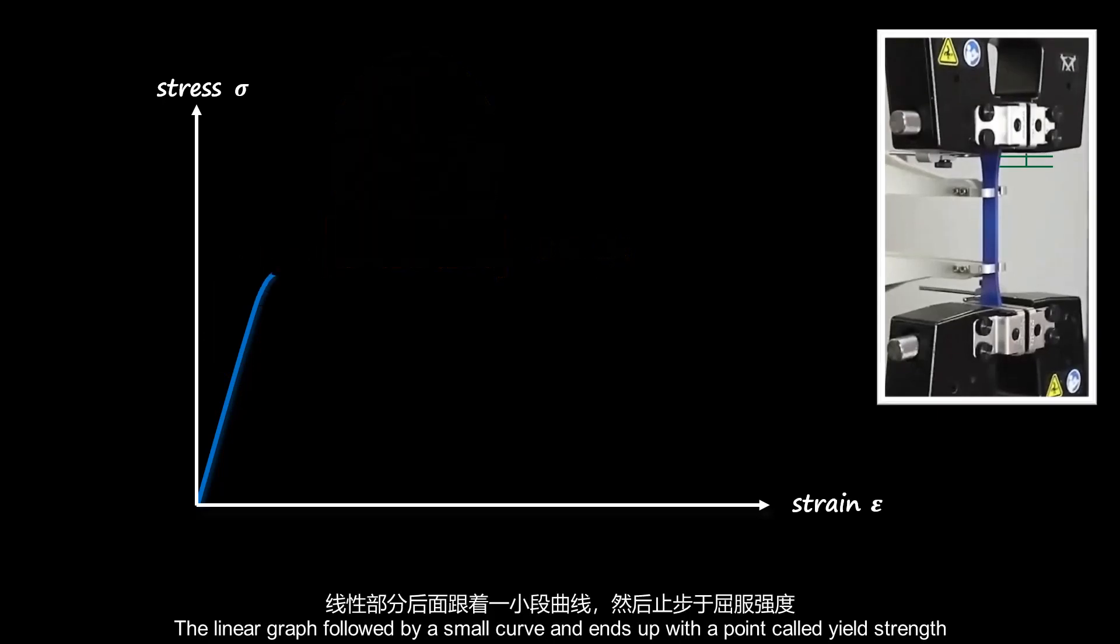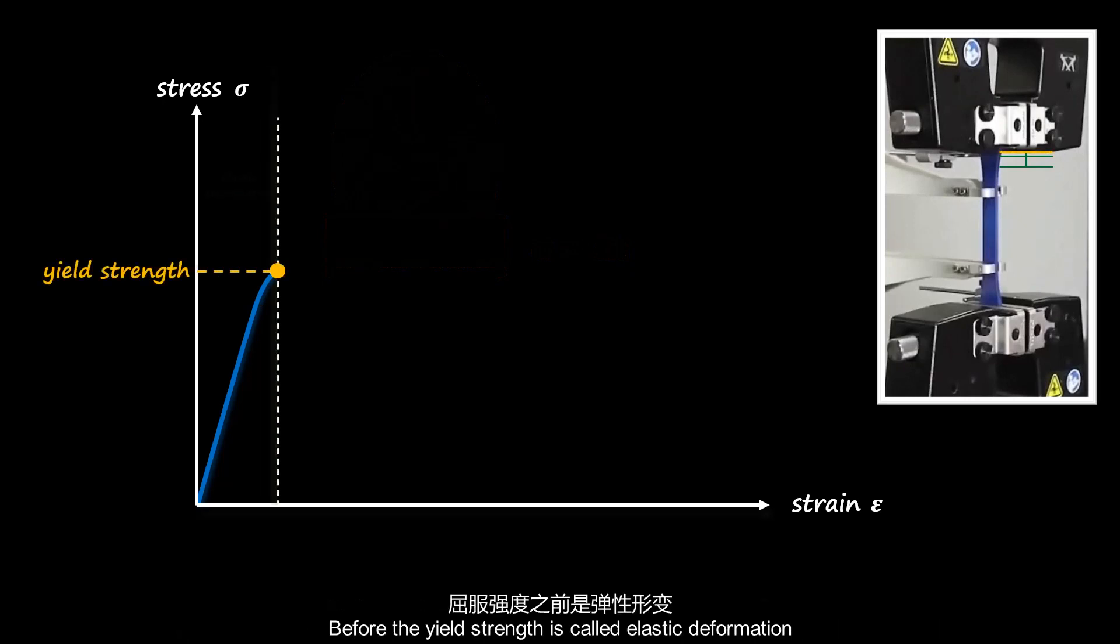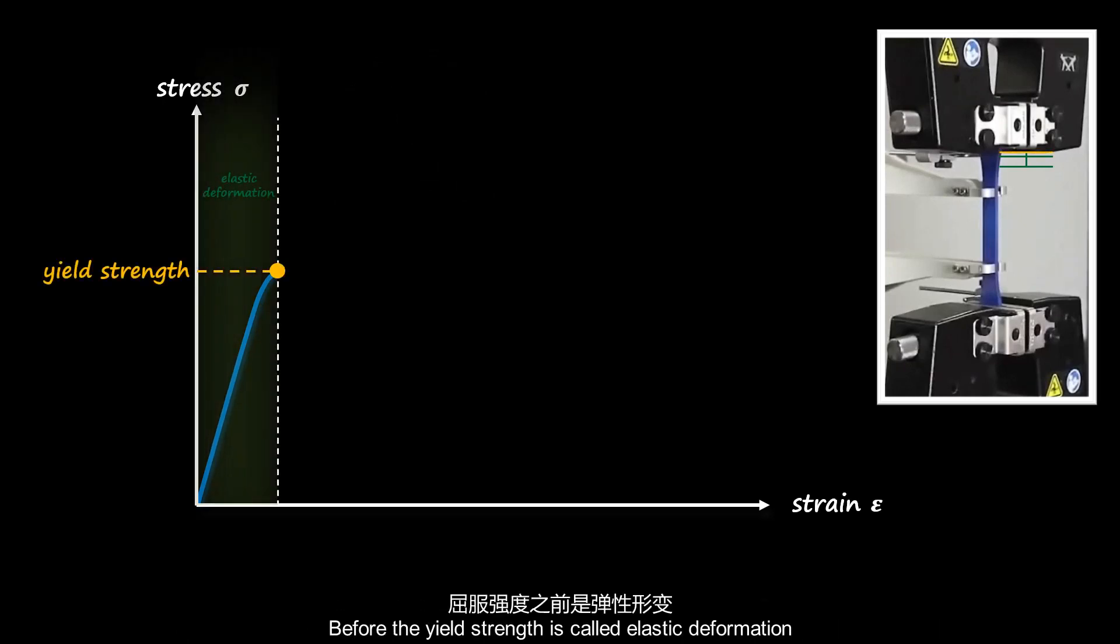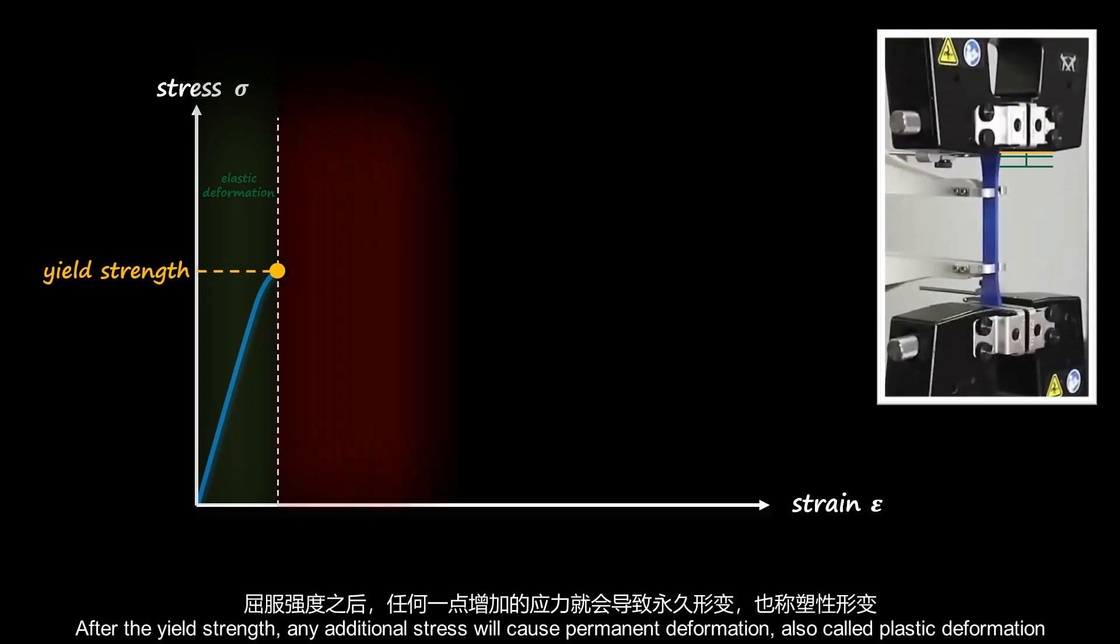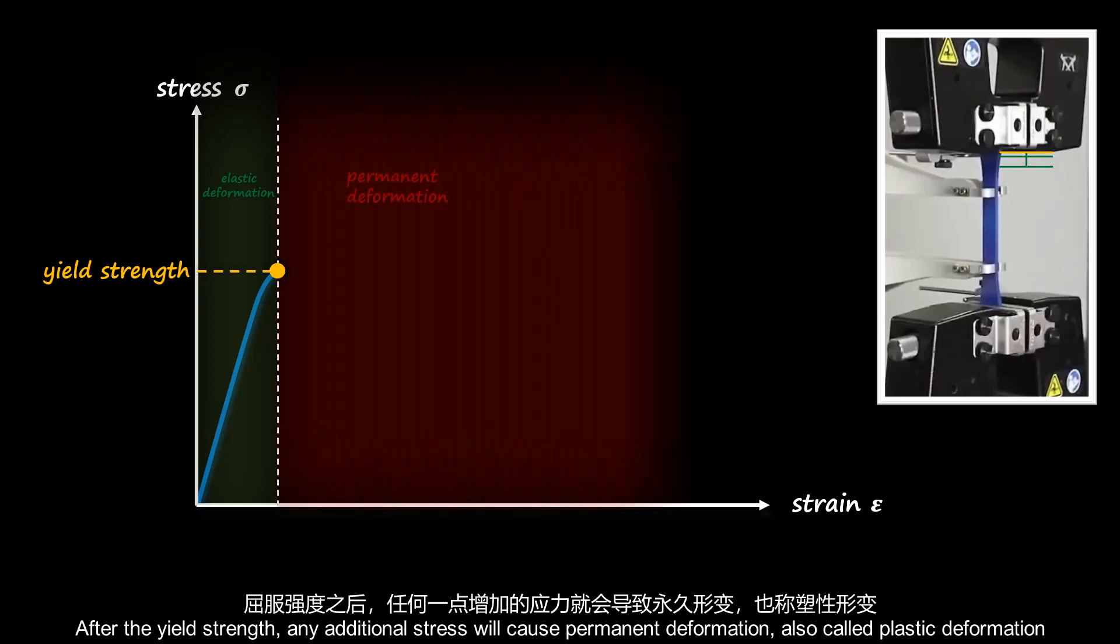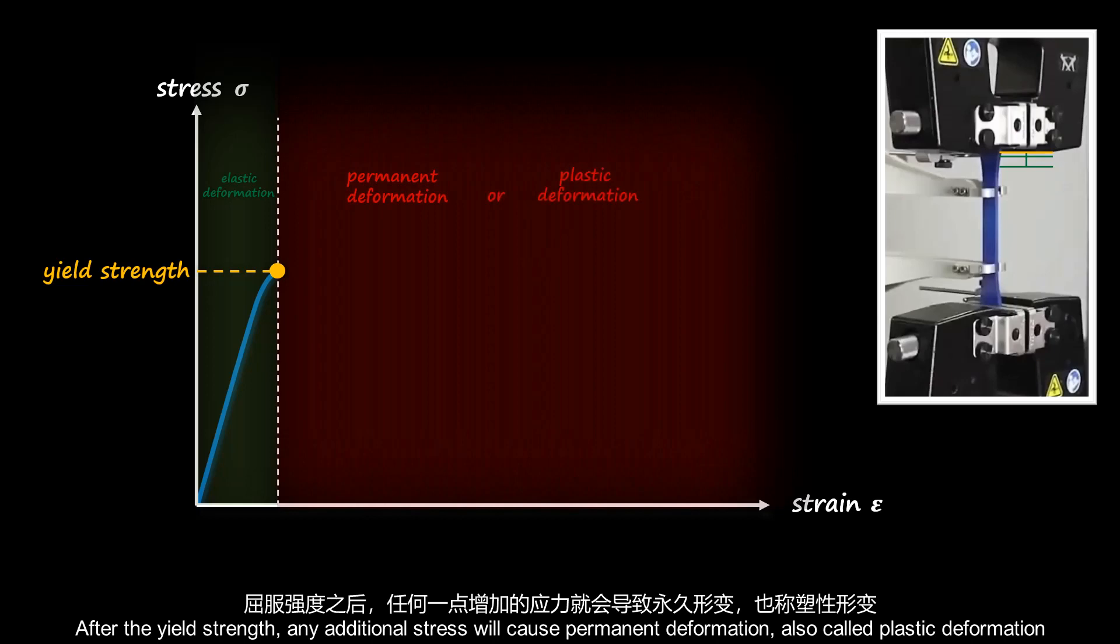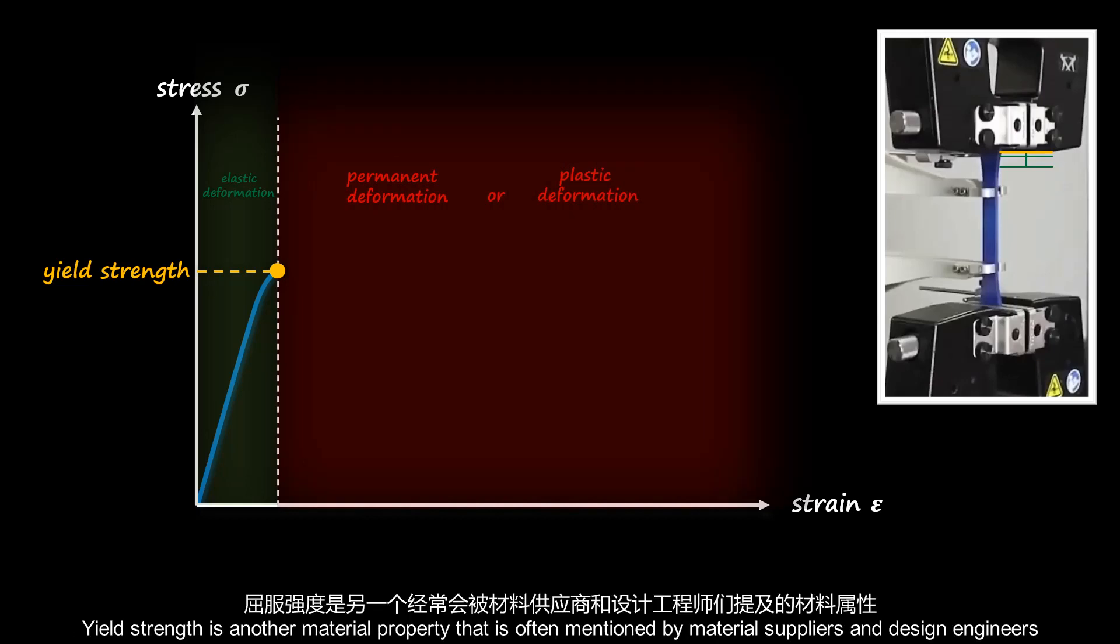The linear graph is followed by a small curve and ends up with a point called yield strength. Before the yield strength is called elastic deformation. After the yield strength, any additional stress will cause permanent deformation, also called plastic deformation. Yield strength is another material property that is often mentioned by material suppliers and design engineers.